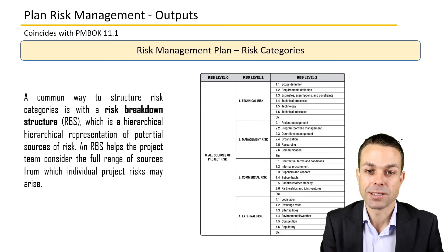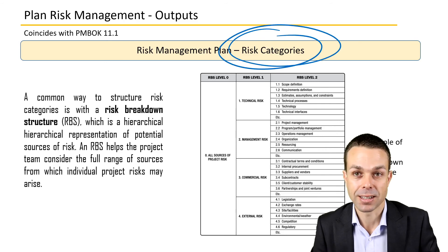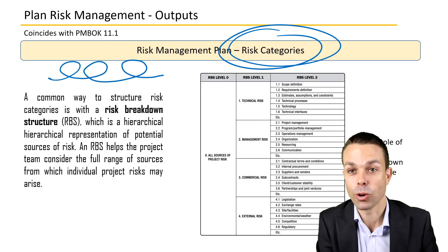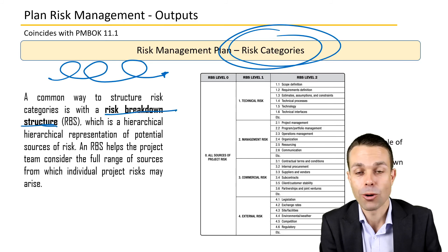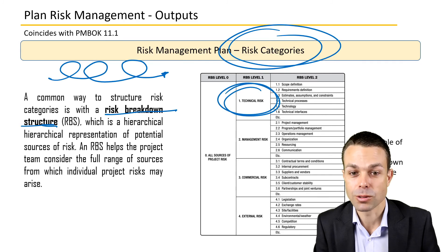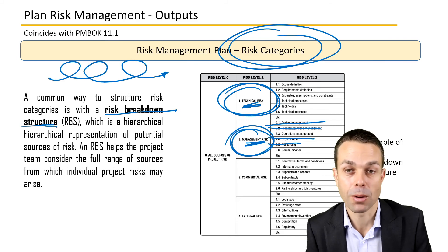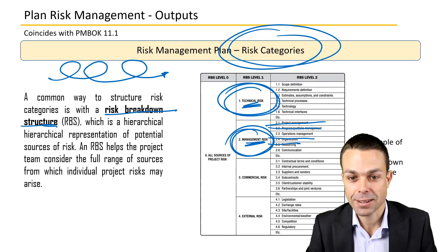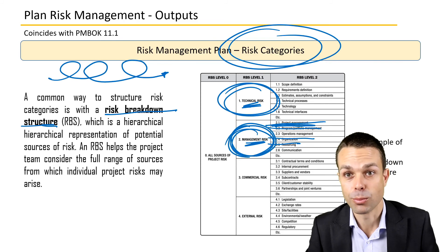One great output of this process is the risk categories. We come up with a bunch of risk categories and put them into the risk management plan as a first idea of the risks we understand for our project. This can be iterative — we might add to those as the project goes along. This involves a risk breakdown structure, similar to our work breakdown structure. We start with high-level risks — maybe a technical risk or a management risk — and then list all risks in that particular category. The organization you're working in might already have categories from previous projects, and you can use those and add your own.